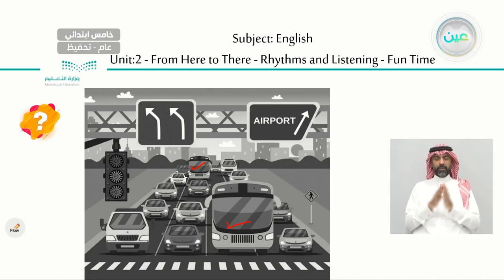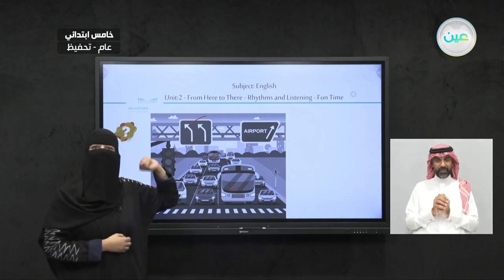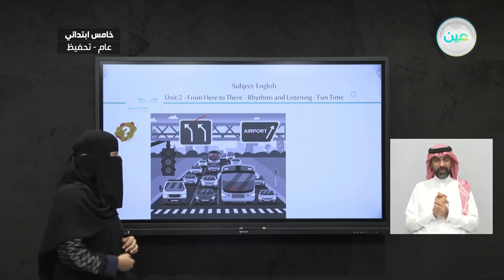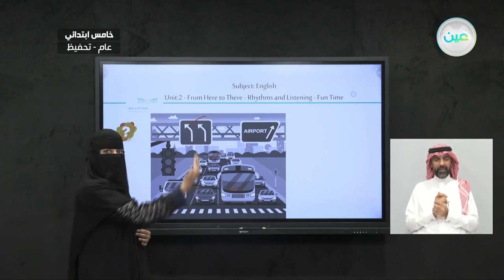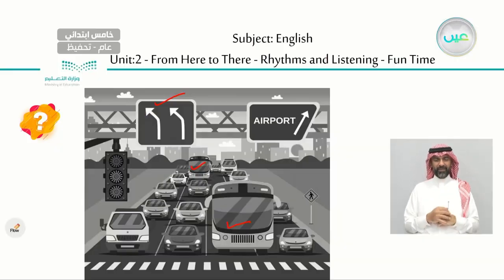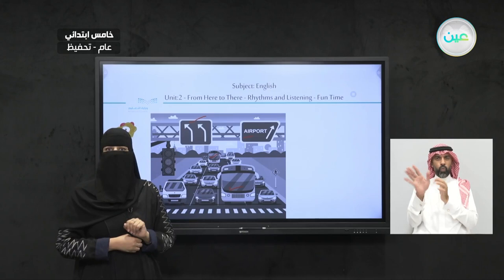What else can you see? Road signs. Very good. Can you tell me what does this sign mean? Go straight, then turn left. That's good. What about this one? This shows the way to the airport. Very good, excellent.